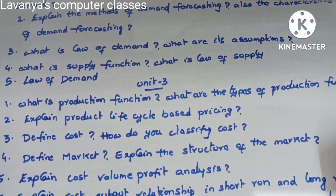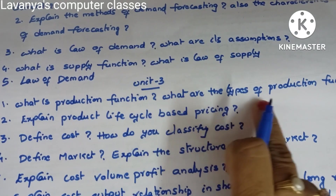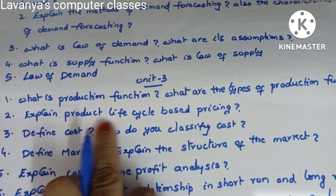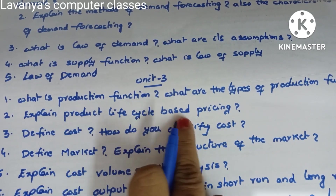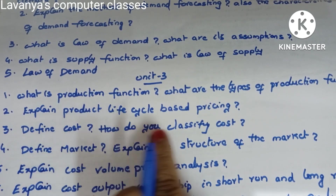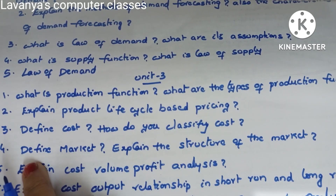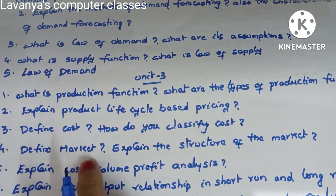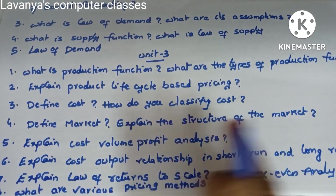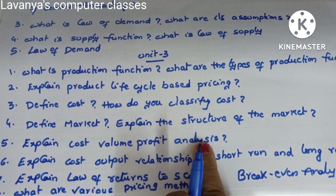Unit three important questions: first, what is production function and what are the types of production functions? Next: explain product life cycle based pricing. Third: define cost and how do you classify cost — that means types of cost. Fourth: define market and explain the structure of the market.